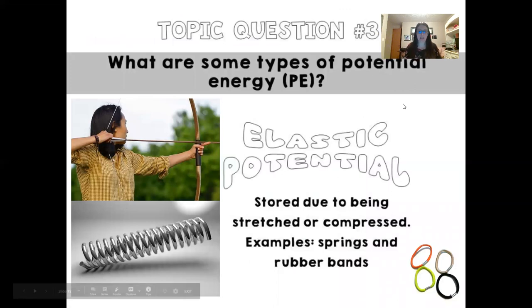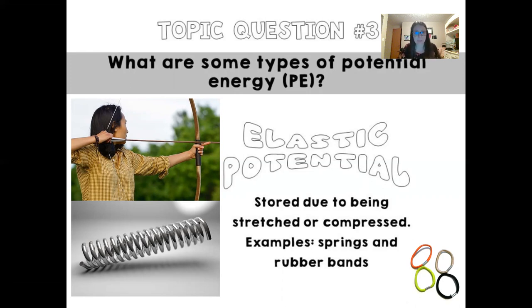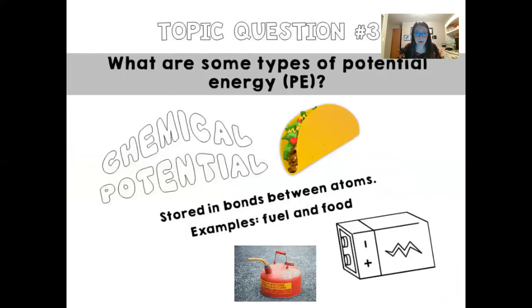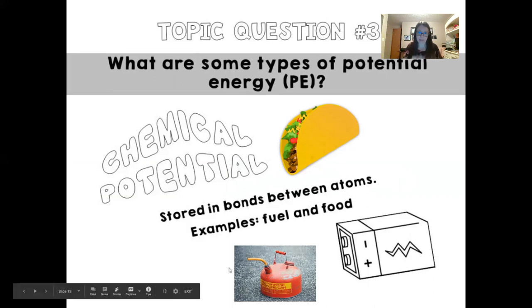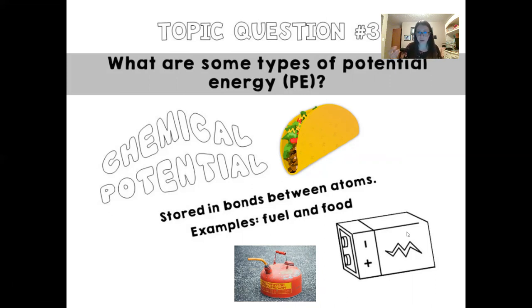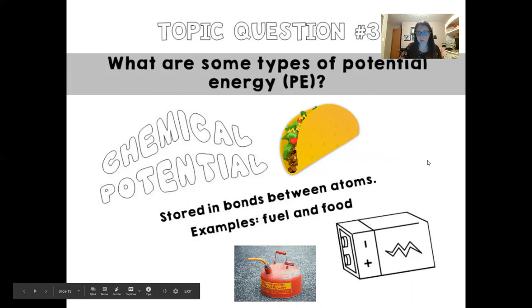Other types of potential energy include elastic potential energy — energy stored due to being stretched or compressed. Springs, rubber bands, and archery all utilize elastic potential energy. Chemical potential energy is the energy stored in bonds between atoms. Examples include food and fuel. Think of tacos, a gasoline can, or a battery — energy is stored in the chemical bonds of your food, gasoline, or the chemicals in the battery.